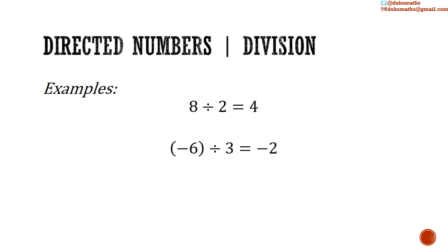Negative 6 divided by positive 3: 6 divided by 3 is equal to 2. A negative divided by a positive is equal to a negative — negative 2. Positive 5 divided by negative 5: 5 divided by 5 is equal to 1. A positive divided by a negative is equal to a negative, so negative 1.